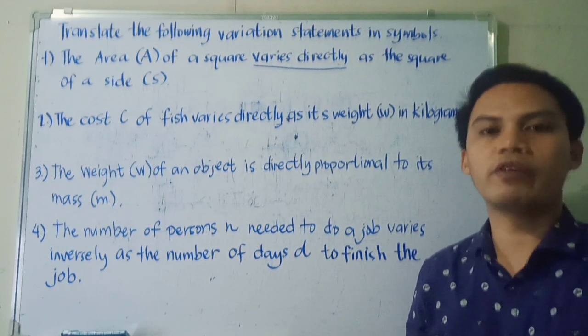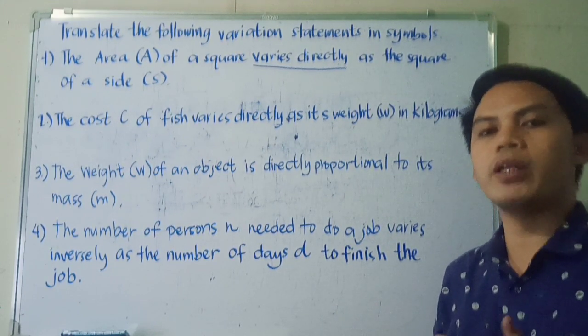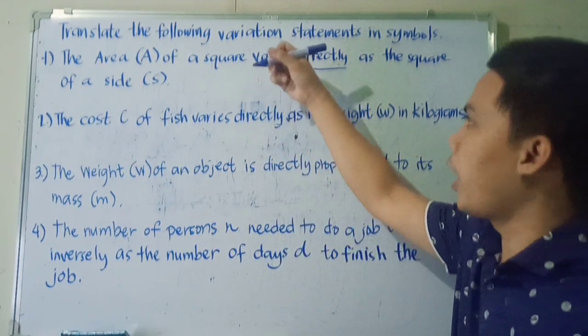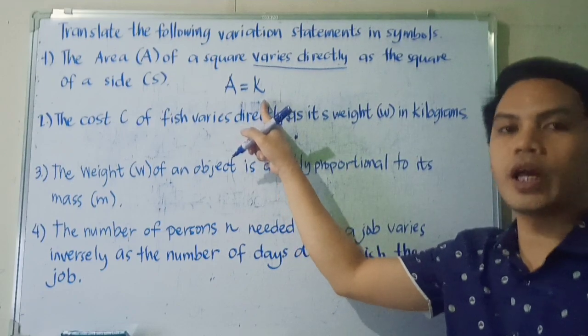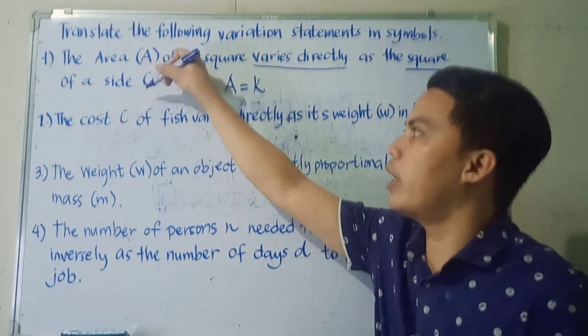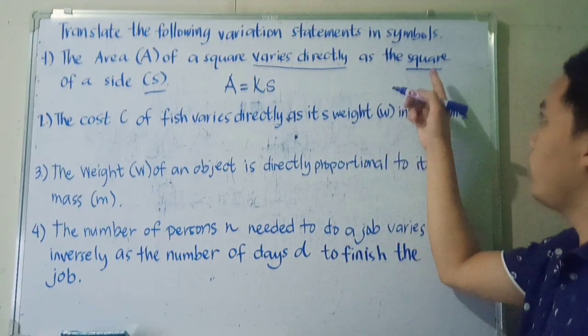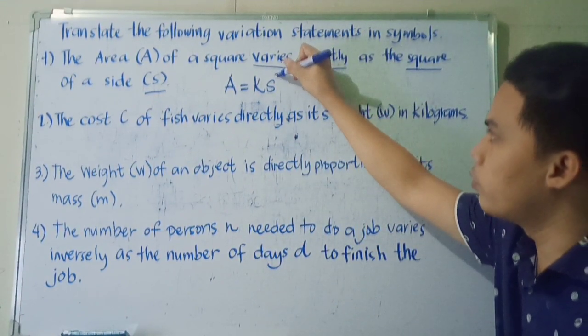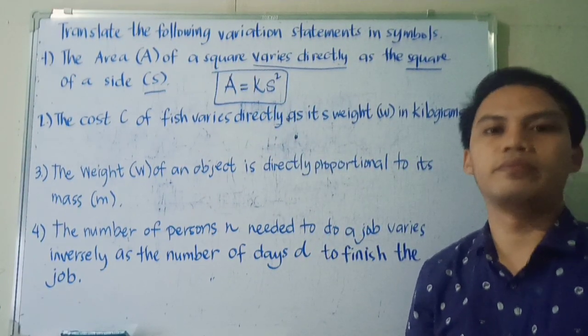So that means we're going to use direct variation. So again, the form of direct variation would be y equals kx. So we'll just replace y and x depending on the given variables of the statement. So we have the area A. So A equals k. K would be our constant. Then varies directly as the square of the side S. So our side S has another condition. So it says square of the side. So that means we're going to raise S to the power of 2. So our answer would be A equals k S squared.